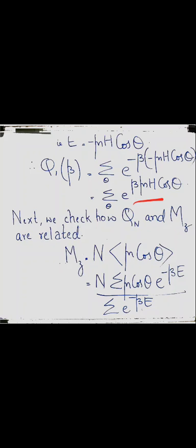The average or mean magnetic moment in the direction of the field, m_z, gives the degree of magnetization: m_z = N × <mu*cos(theta)> = N × [sum(mu*cos(theta) * e^(-beta*E)) / sum(e^(-beta*E))]. In canonical ensemble formulation, the expectation value of any physical quantity f is found as f times the probability, where probability = e^(-beta*E) / sum(e^(-beta*E)).